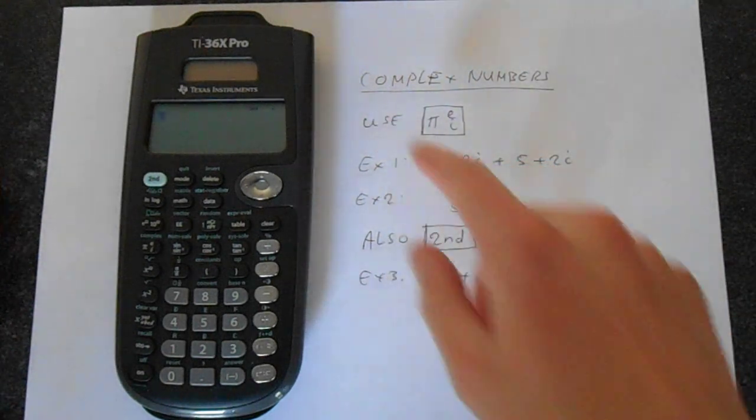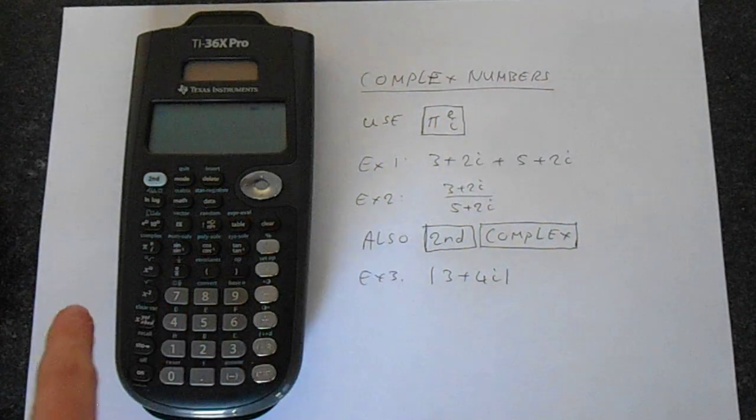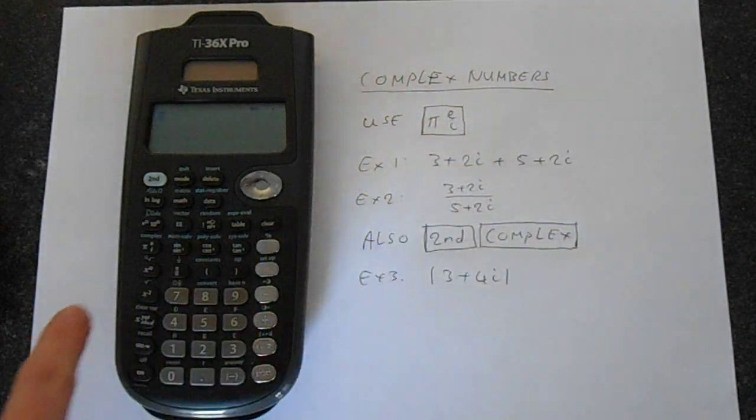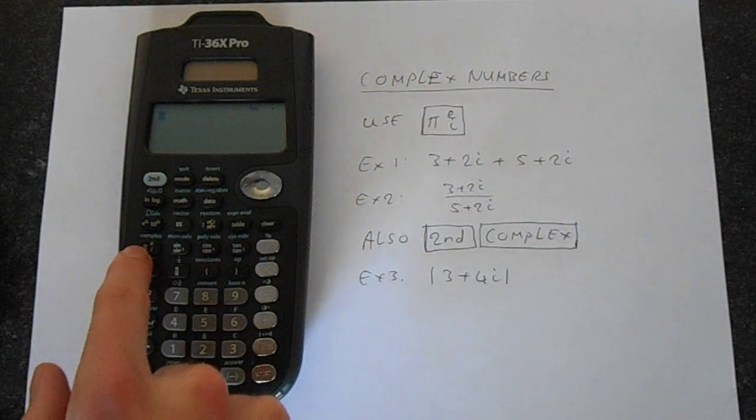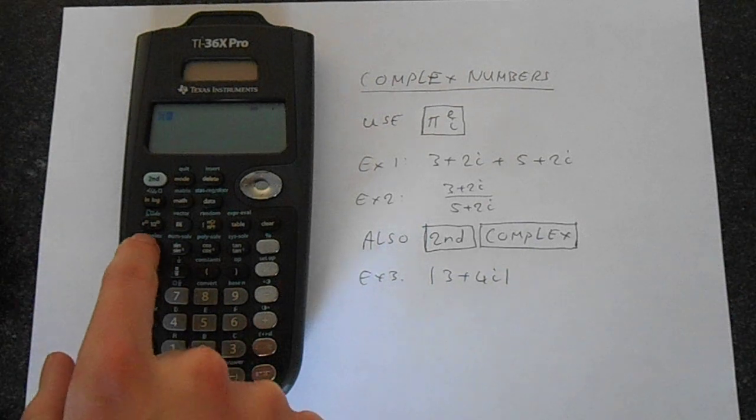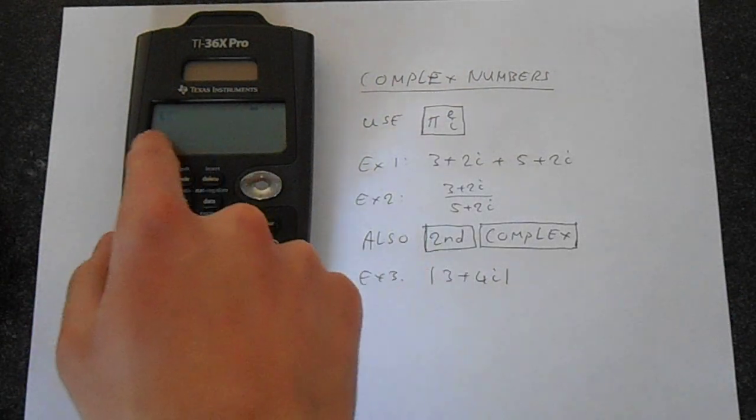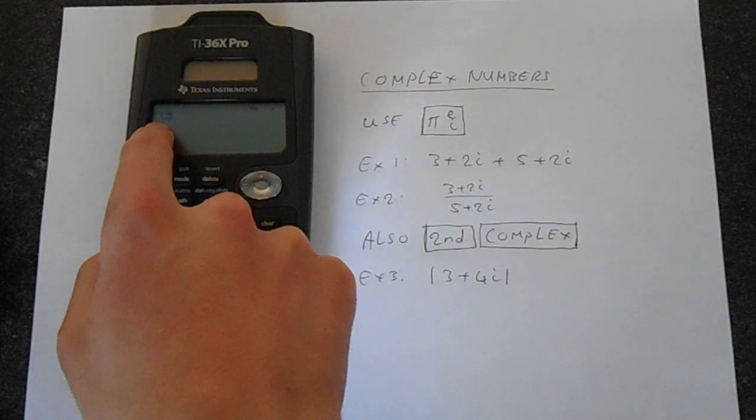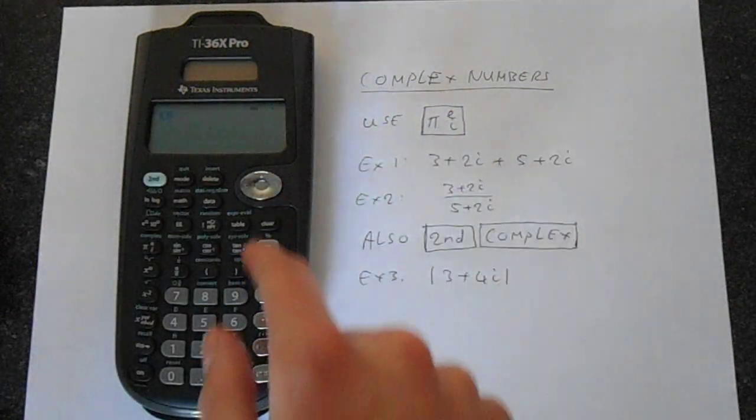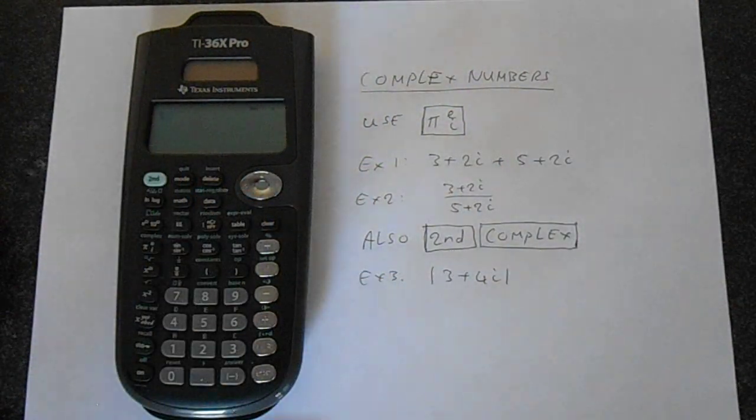To access the complex number i, you use this button which is pi-e-i, and it's located across here. If you press this repeatedly, you see if you press that three times you get i, two times you get e, and the first time you get pi.